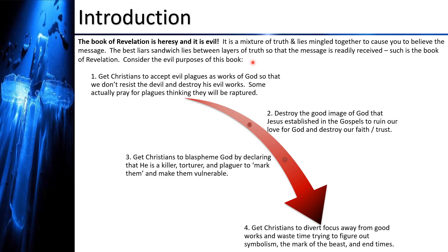The best liars sandwich lies between layers of truth so the message is readily received. If A is true, B is something new, and C is true — they believe B because A and C were true, so B must be true also. This 'sandwich technique' is what we see in the book of Revelation: truth, lie, truth, lie. We see God doing evil things sandwiched between truths we know, and we're compelled to believe that evil image of God.